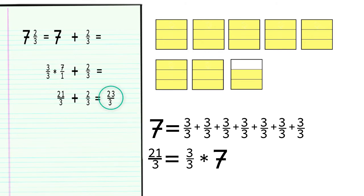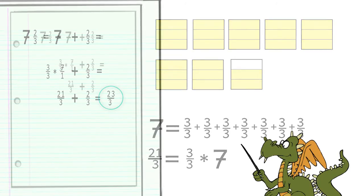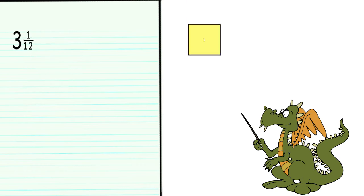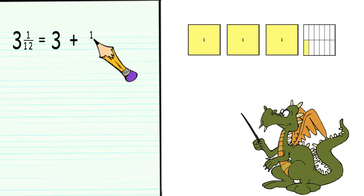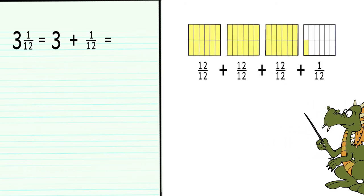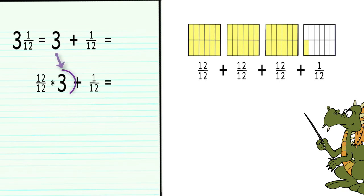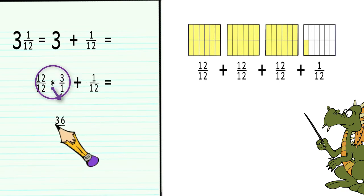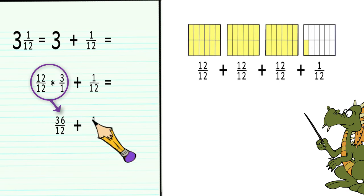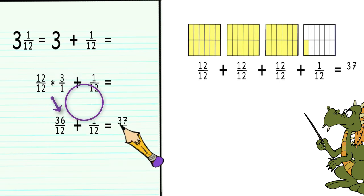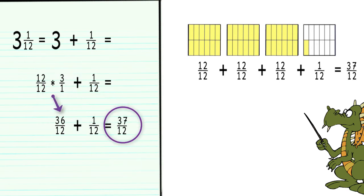On paper, let's do one more quick example. The number 3 and 1 twelfth is the same as 3 plus 1 twelfth. Since we need to work with equal size pieces, let's ask ourselves how many twelfths there are in 3 wholes. 12 twelfths would represent 1 whole, and we have 3 wholes. So we have 36 twelfths plus our additional 1 twelfth, giving us a total of 37 twelfths.